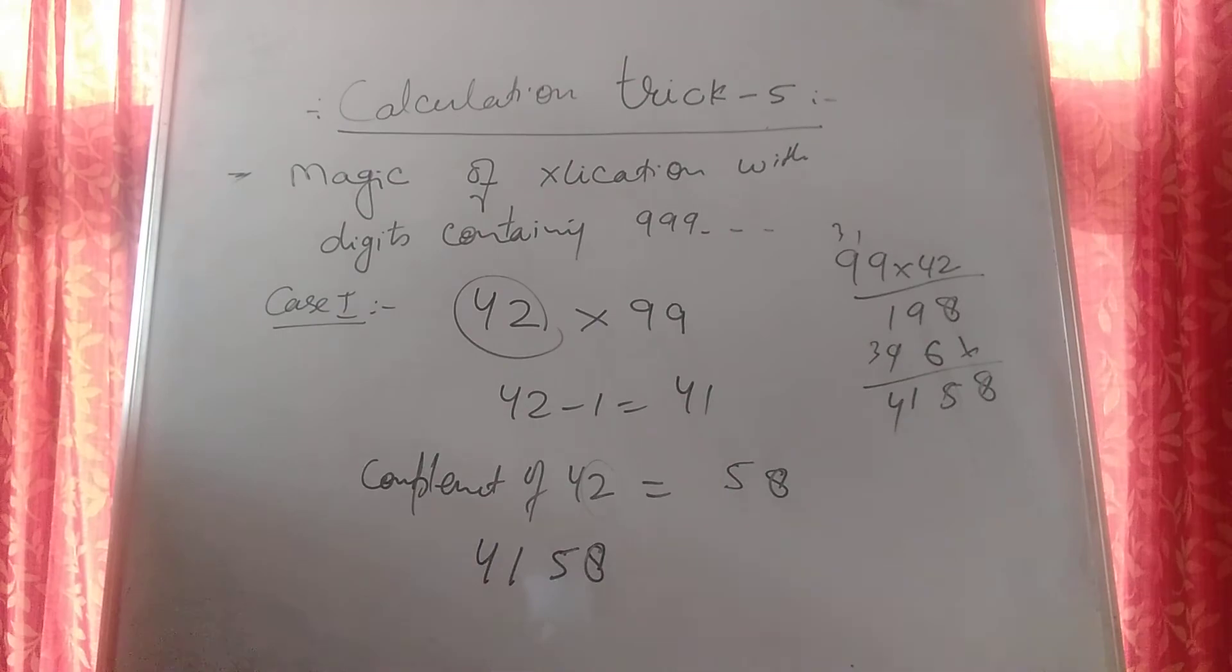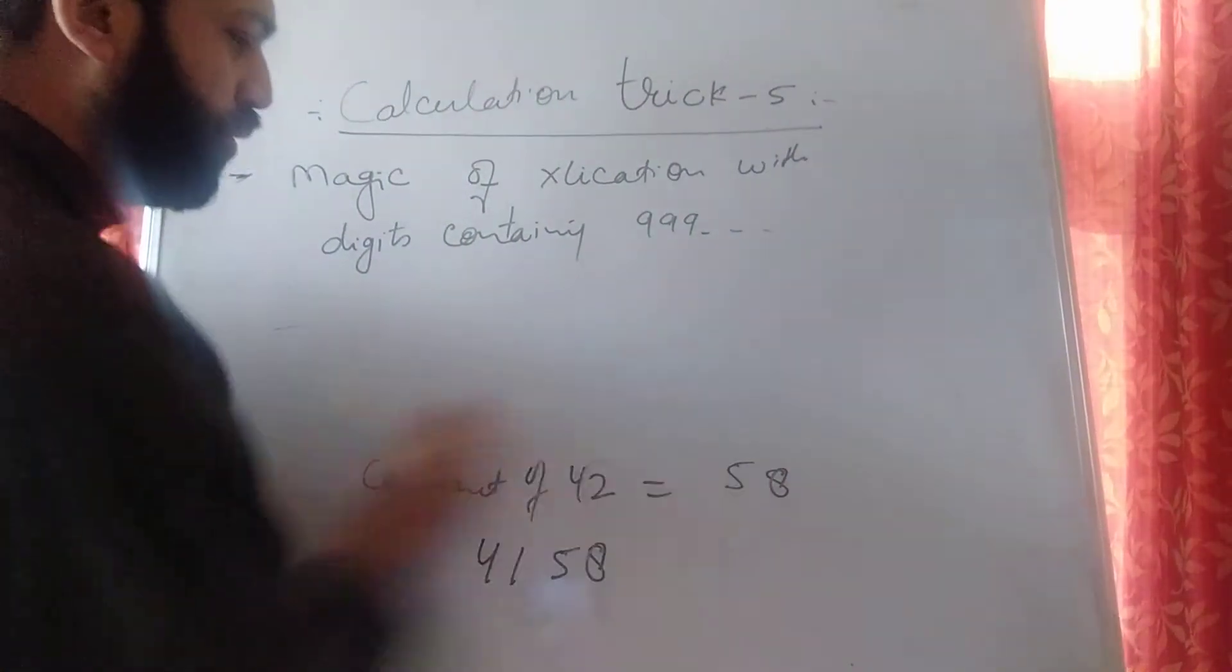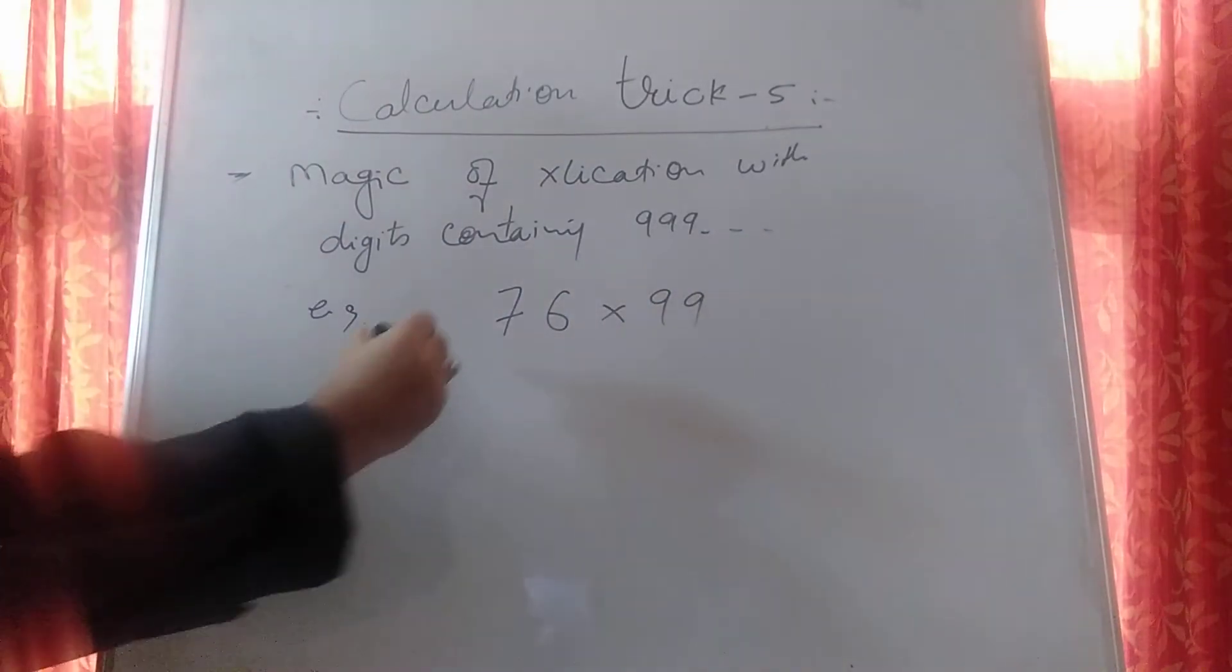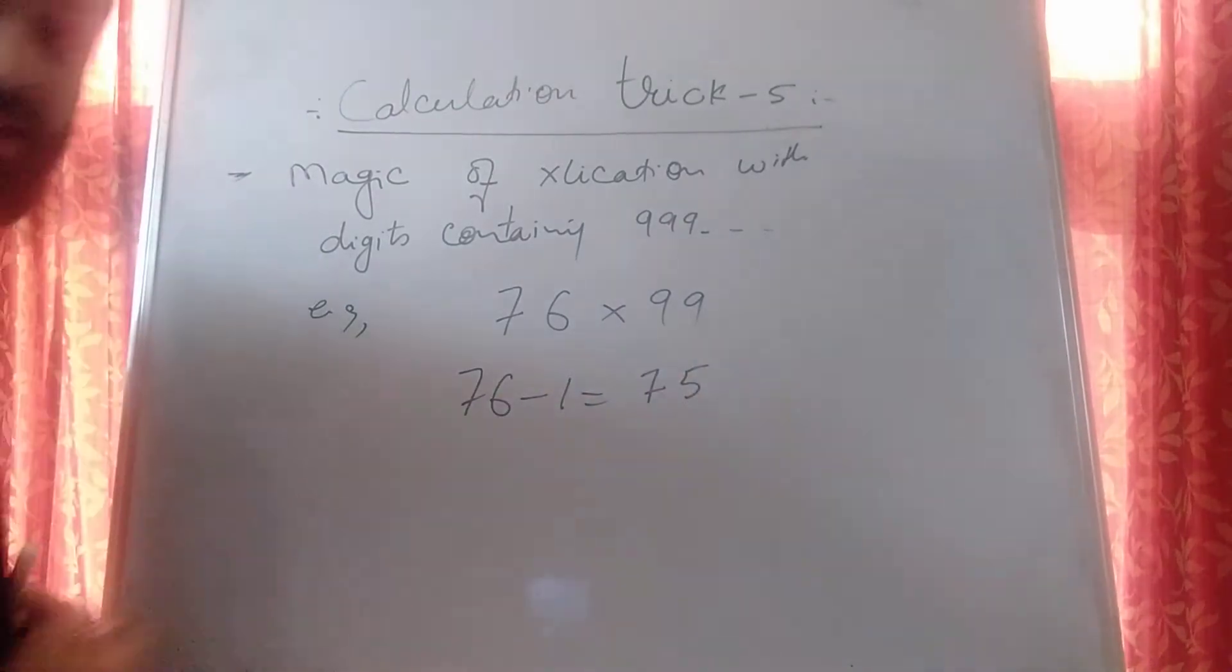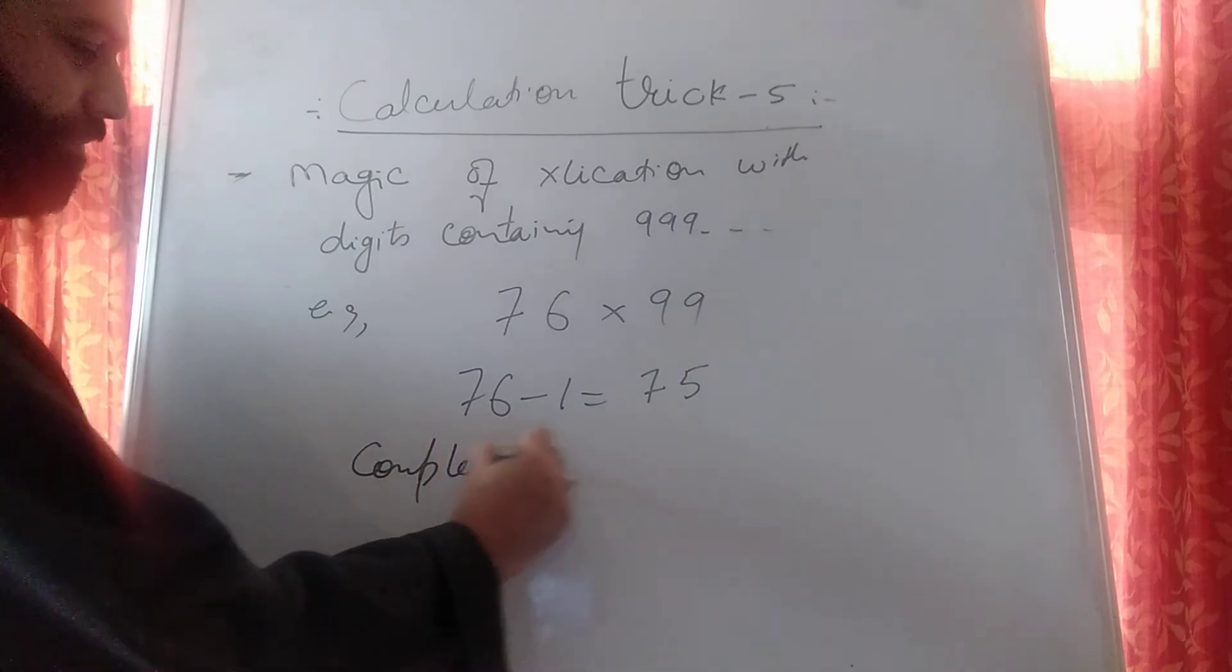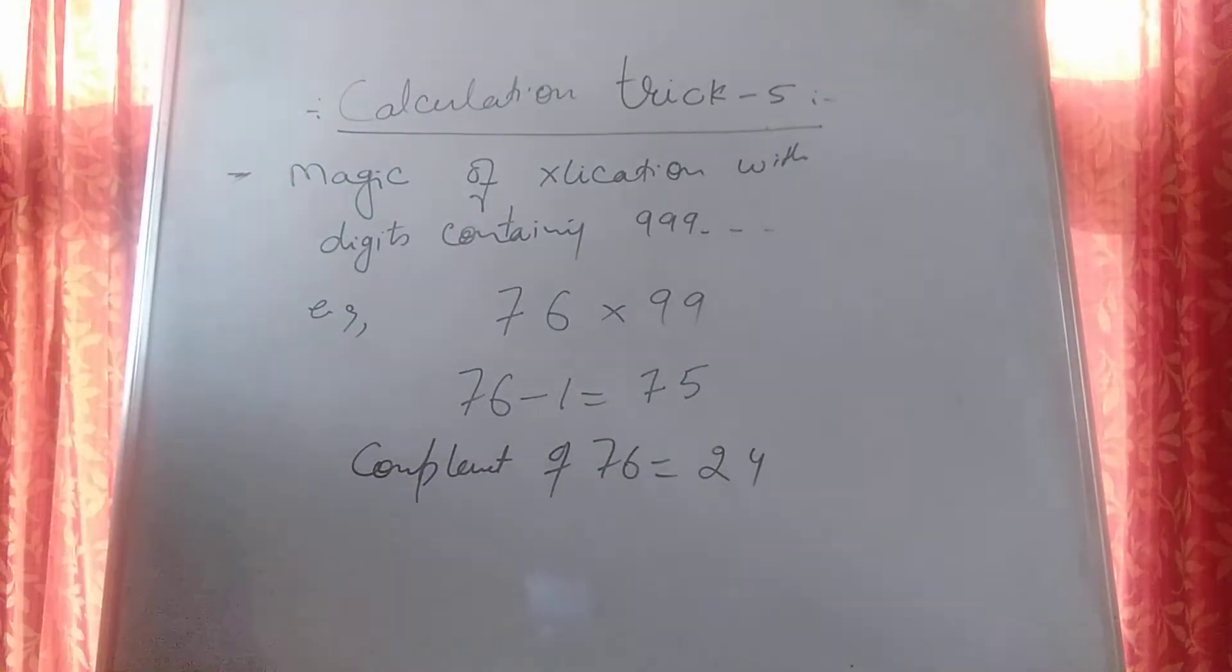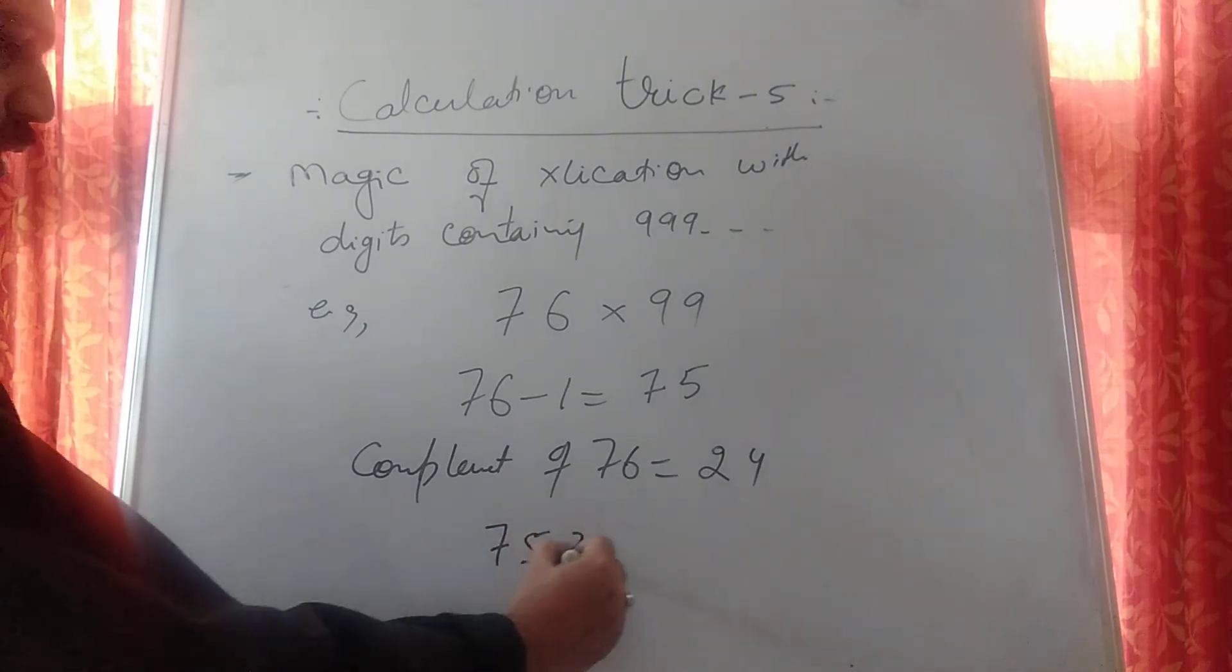Okay, one more example to make it clear to all of you. You have to multiply 76 with 99. So what to do? Subtract 1 from 76. What you will get? 75. Get the complement of 76. 10 minus 6 is 4. 9 minus 7 is 2. So the answer comes out 7524.